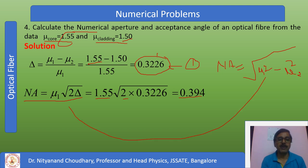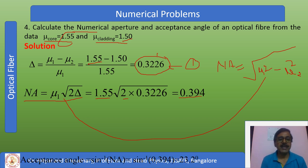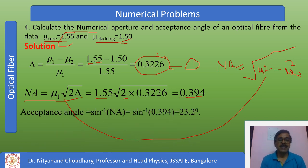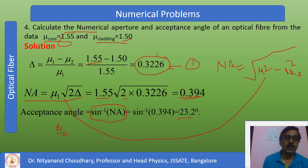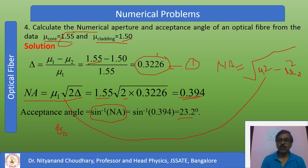You can also verify using NA = sqrt(mu1² - mu2²) and confirm you get the same answer. Then calculate the acceptance angle: theta naught = sine inverse(NA). Substituting the calculated NA, the acceptance angle comes out to 23.2 degrees. Both numerical aperture and acceptance angle are now calculated for problem number 4.